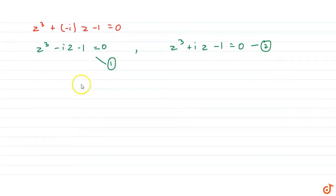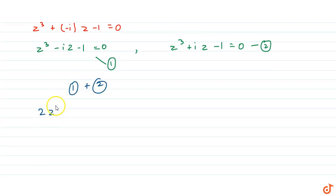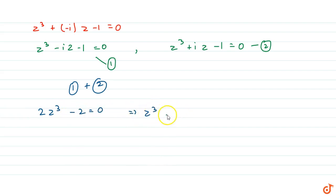Now adding equation 1 and equation 2, we get 2z³ - 2 = 0, that is z³ - 1 = 0. So from here we get z³ = 1. Call this equation 3.